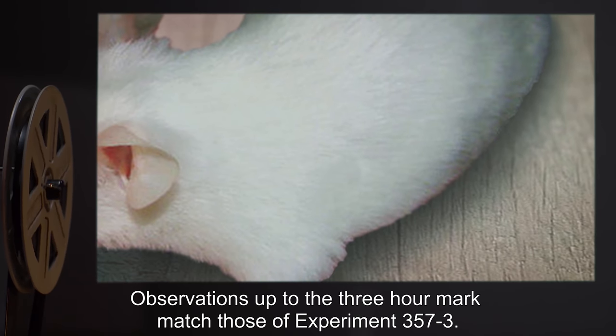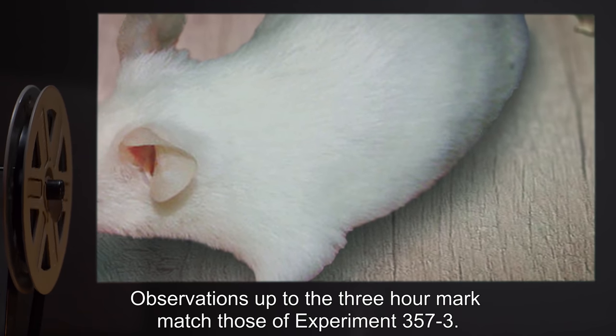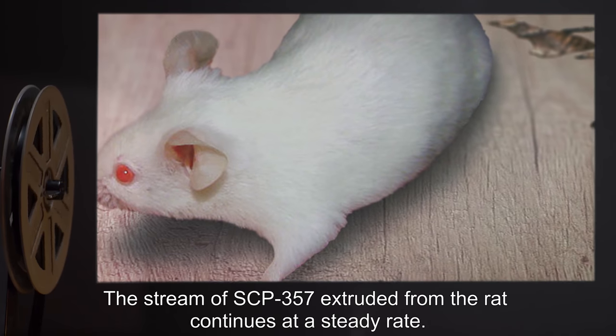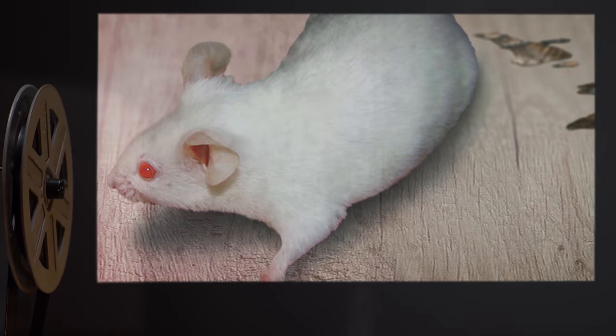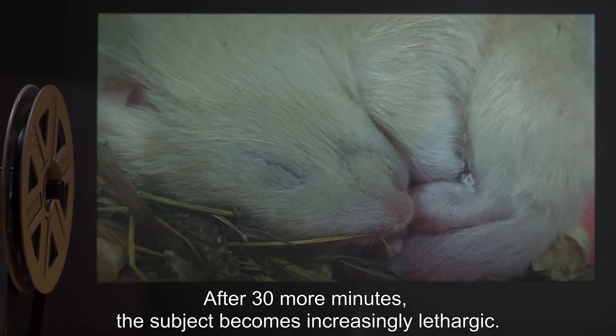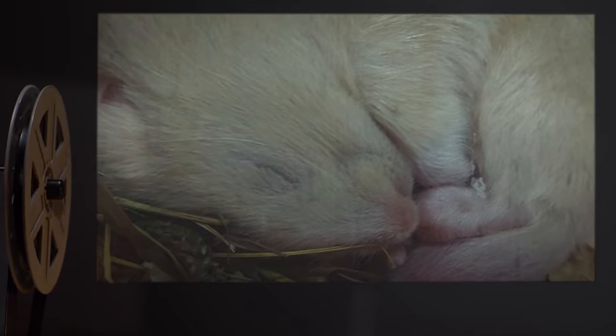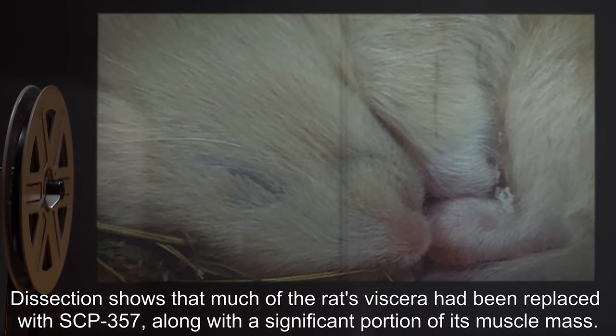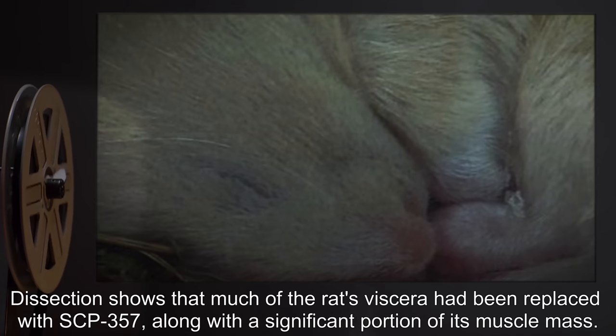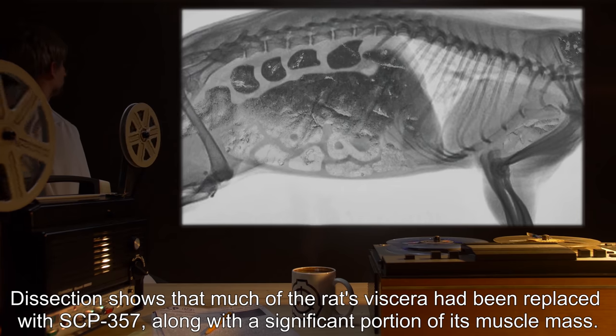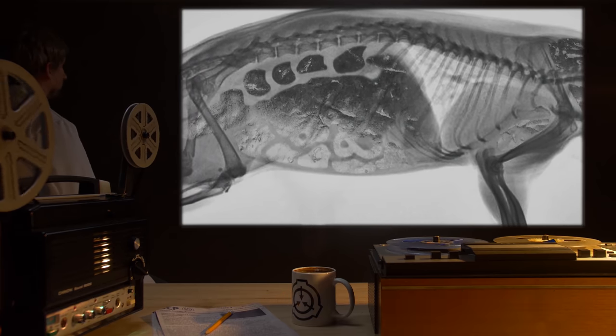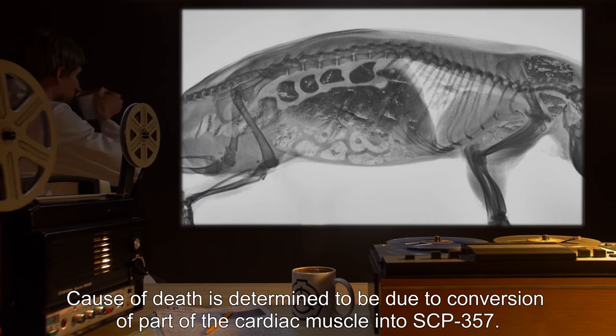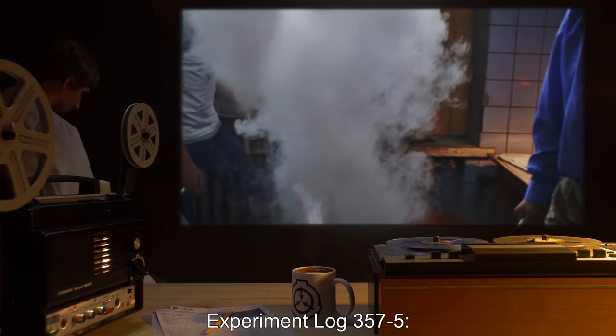Details: Observations up to the three-hour mark match those of Experiment 357-3. The stream of SCP-357 extruded from the rat continues at a steady rate. After thirty more minutes, the subject becomes increasingly lethargic. Fifteen minutes later, death occurs. Dissection shows that much of the rat's viscera has been replaced with SCP-357, along with a significant portion of its muscle mass. Cause of death is determined to be due to conversion of part of the cardiac muscle into SCP-357.